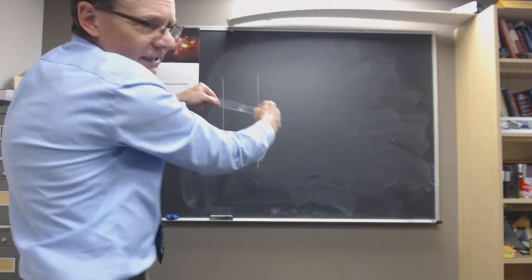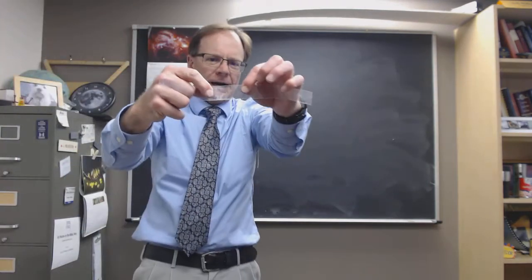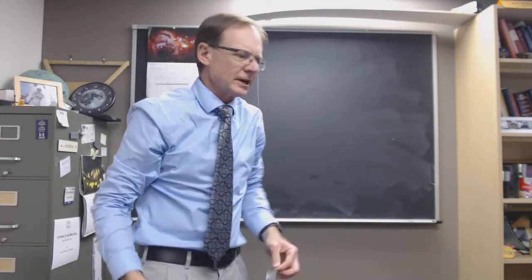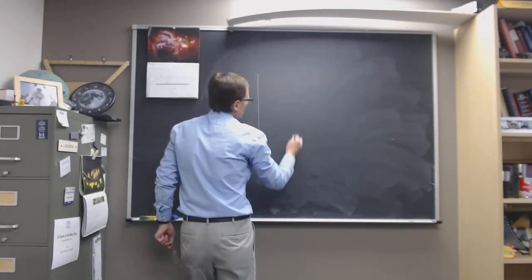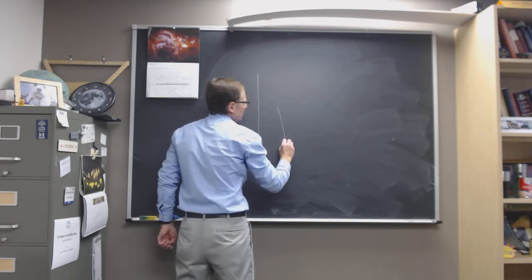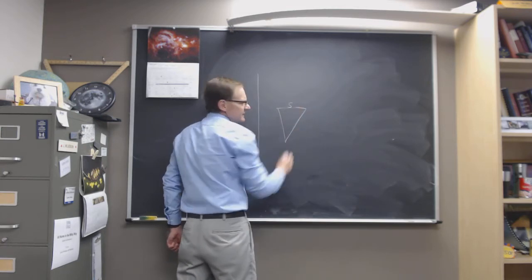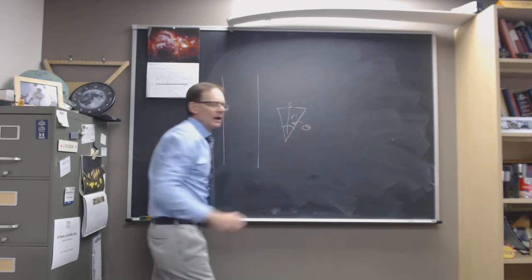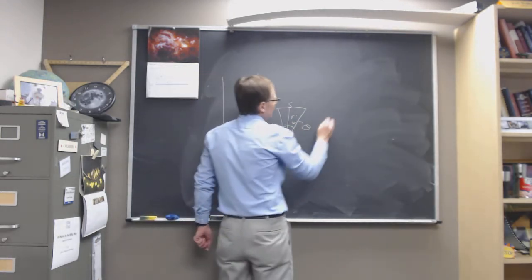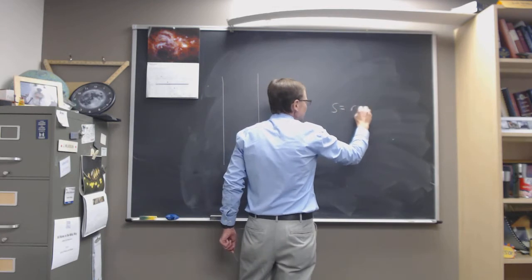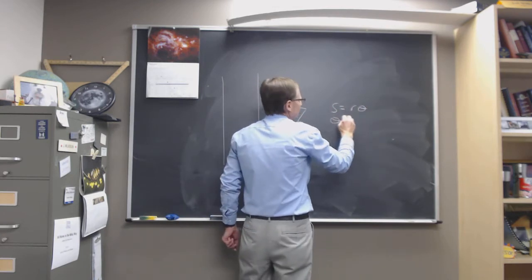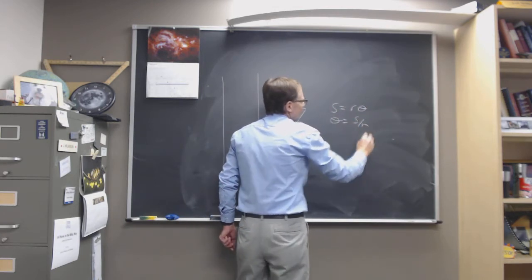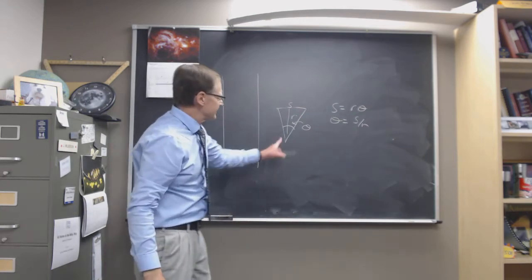So as I align these things with the board, I want to mark where those lines are. Now, what we know is, when we look at something like this, if that distance is s, and this distance is r, and that angle is theta right in there, we know that s is equal to r theta, or theta is equal to s over r, where theta is that angle.